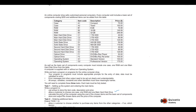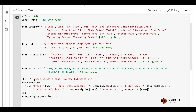Next, to allow a customer to choose one case, one RAM, and one main hard drive, we first display the cases. The customer will see there are two cases available — A1 and A2 — with their descriptions and prices, then choose one. The chosen item will be added to a list for final price calculation. Then the customer sees all available RAMs, chooses one, and then sees the main hard drives.